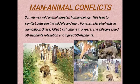Next is man-animal conflicts. Sometimes wild animals threaten human beings, leading to conflict between wildlife and man. A best example is elephants in Sambalpur, Orissa, which killed 195 humans. In retaliation, the villagers killed 98 elephants and injured 30 elephants. These are some images of it.